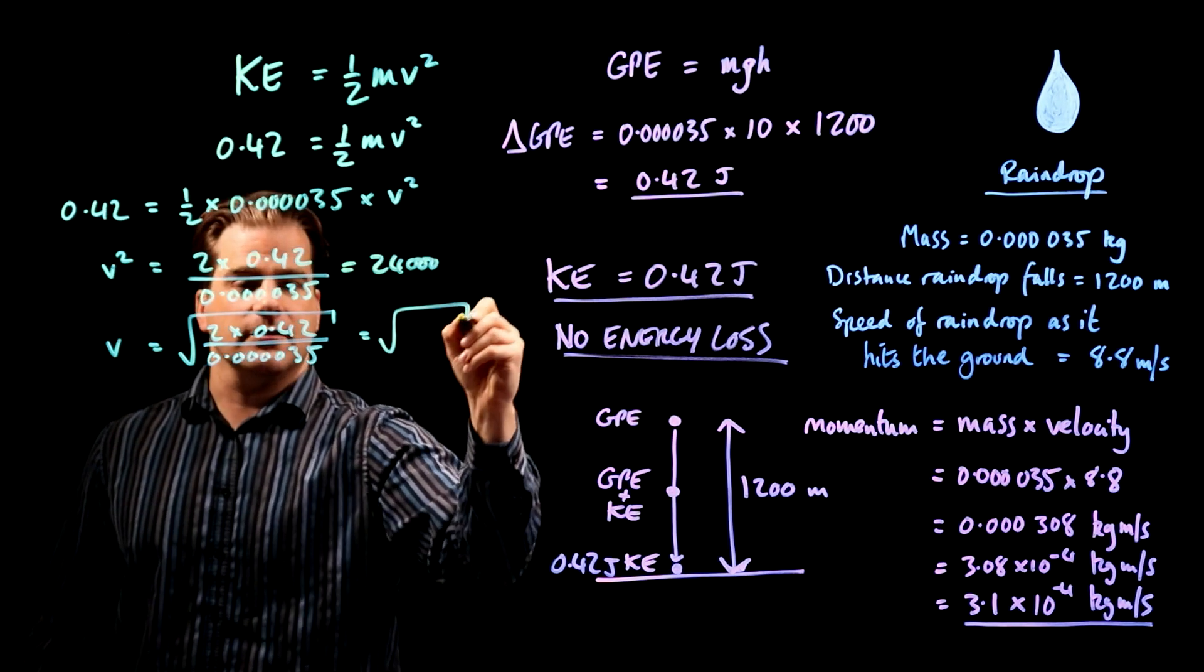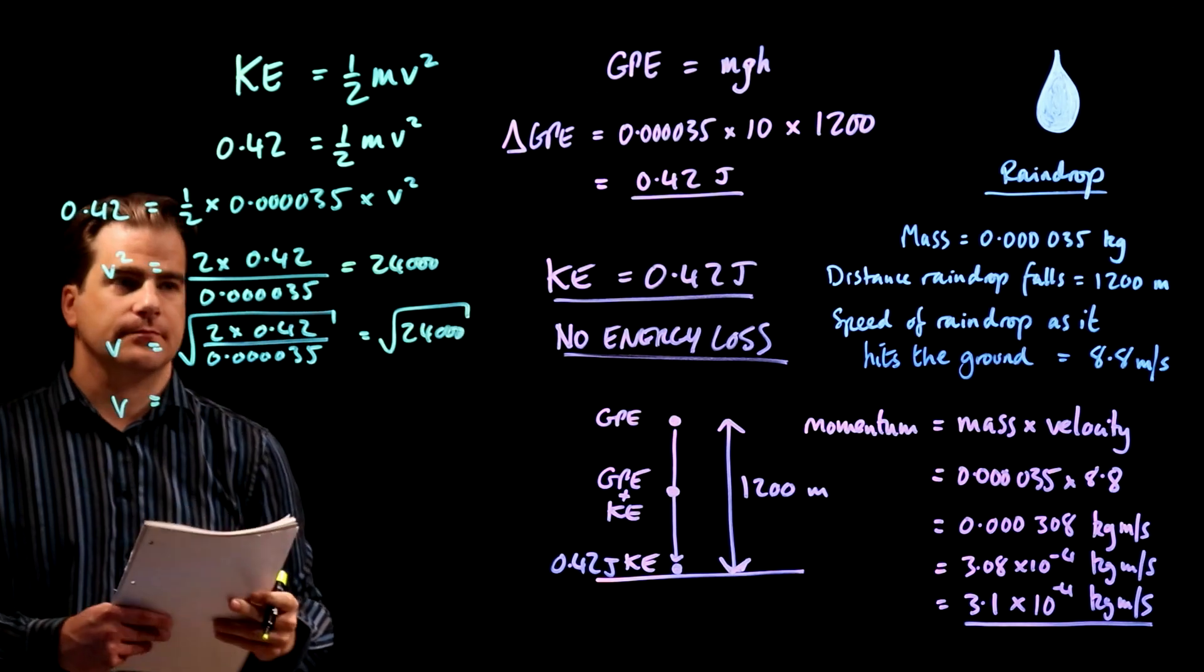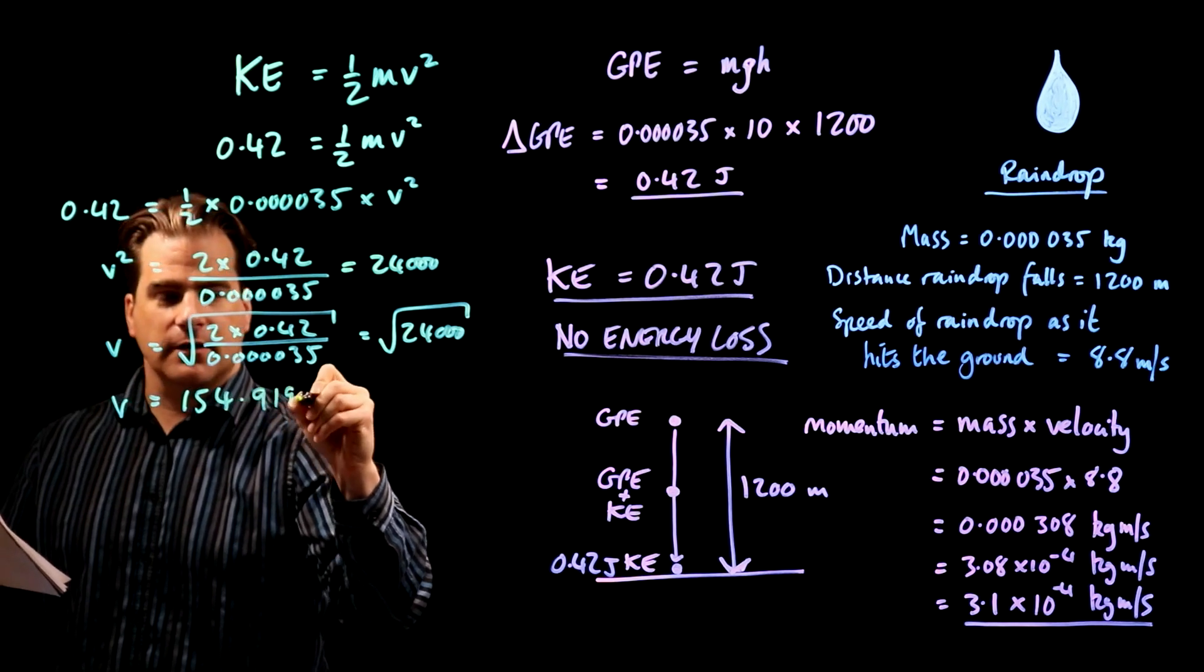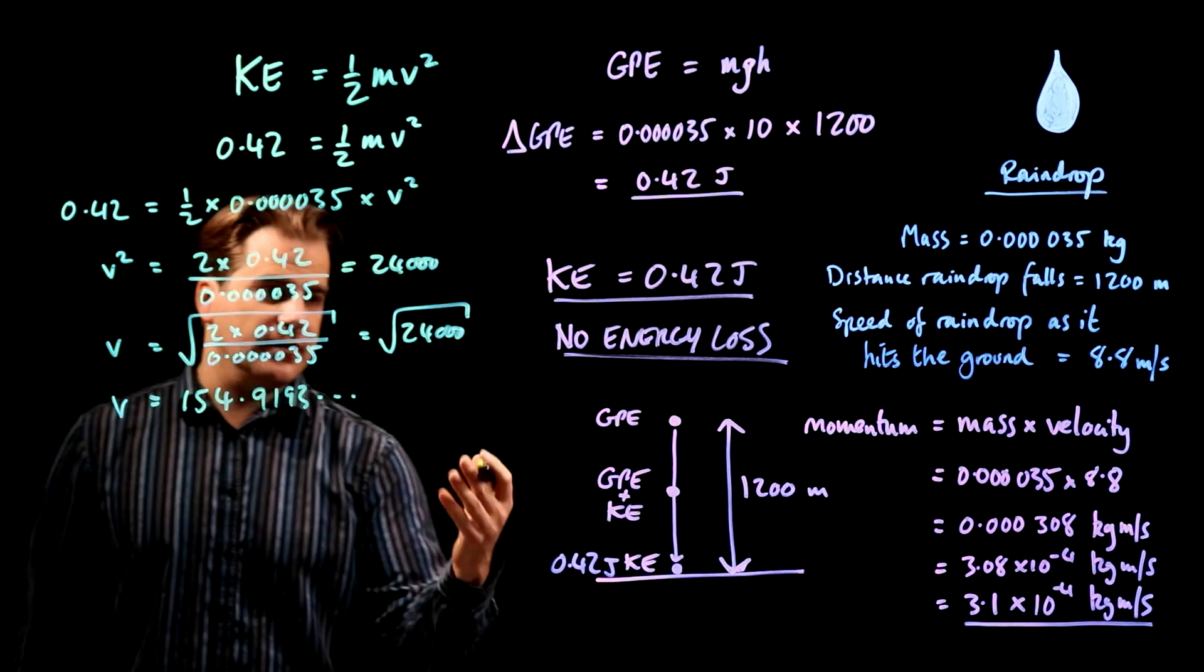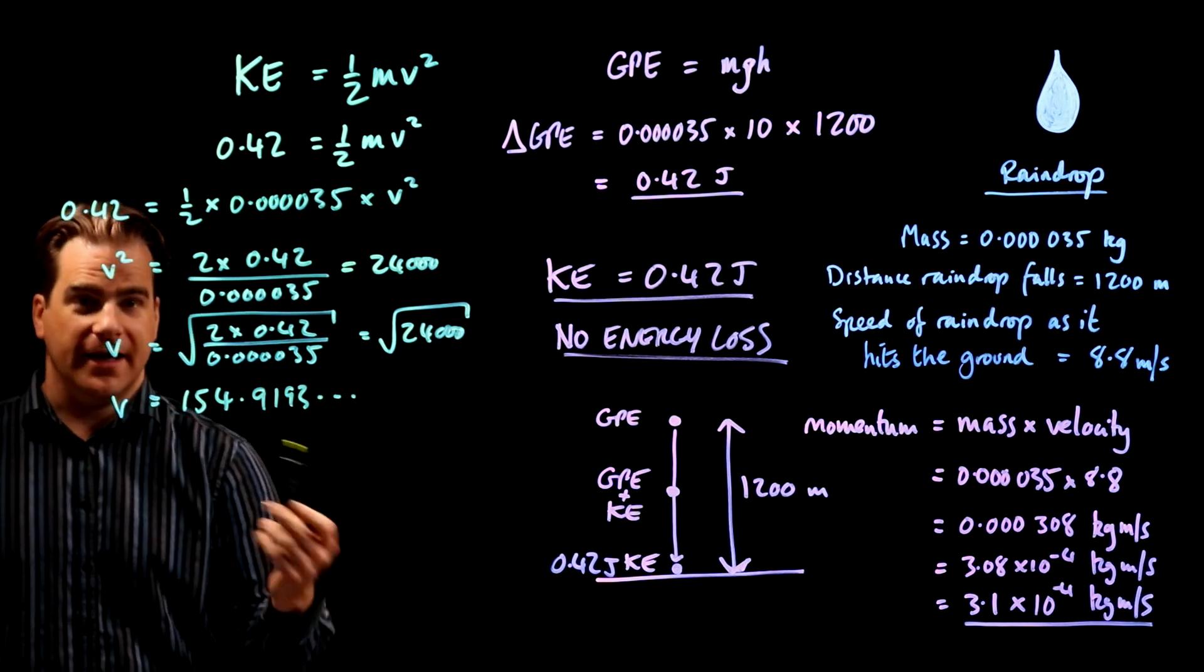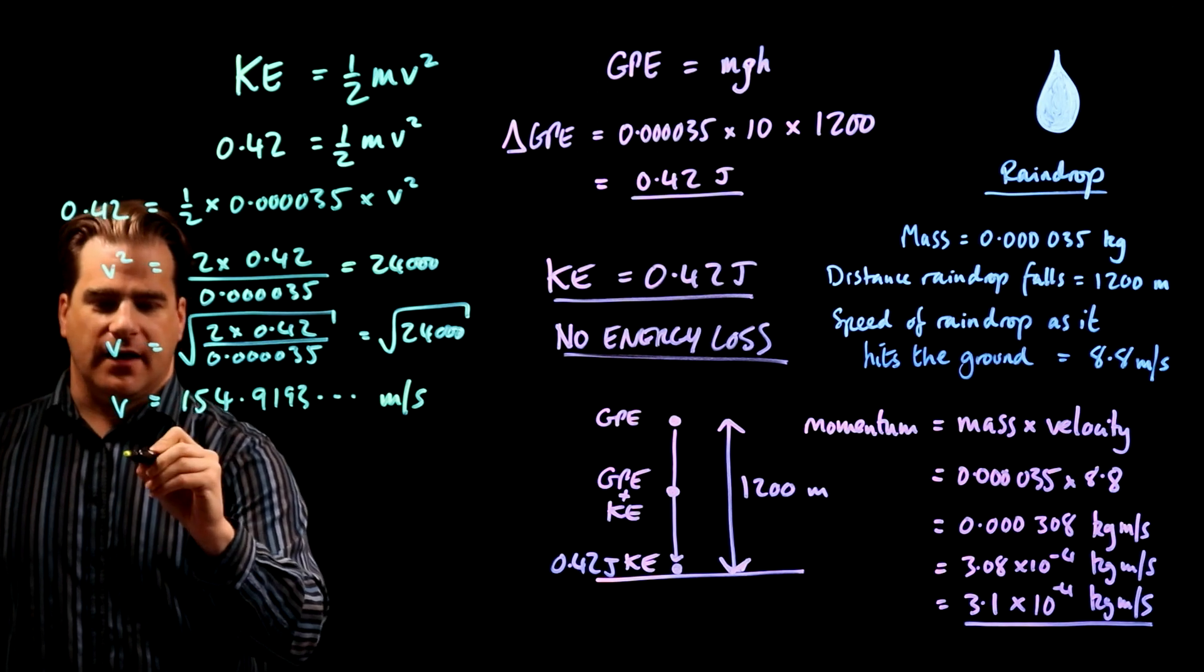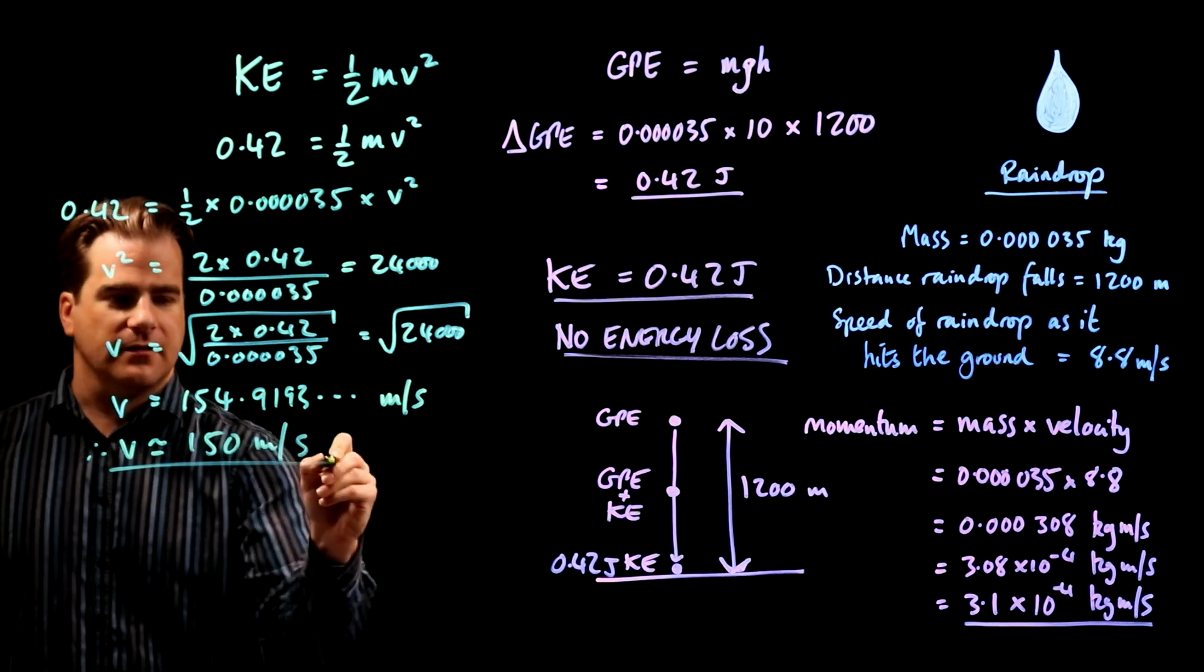okay? So, that's 24,000. So, v is the square root of 24,000. So, v turns out to be 154.9193, whatever, whatever. Okay? And the question asks you to prove that the velocity would be about 150 meters per second, and 154 is about 150, okay? Don't forget the unit. So, you can say, if you like, therefore, v is approximately equal to 150 meters per second.